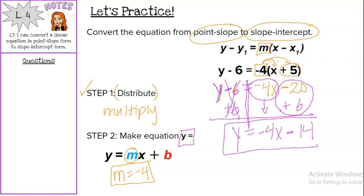y equals negative 4x minus 14. So we're in that y equals mx plus b form. Double check. Is our m the correct number? Yes, it is.